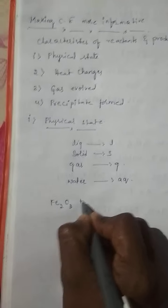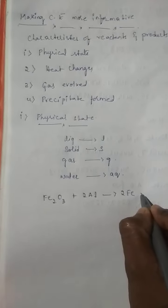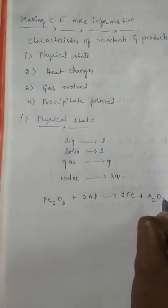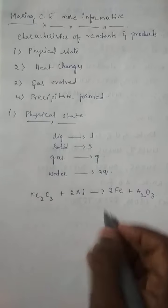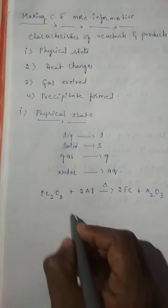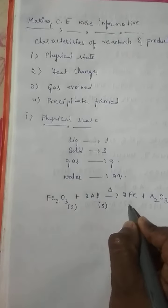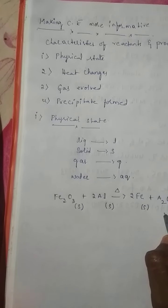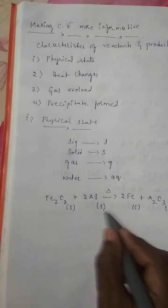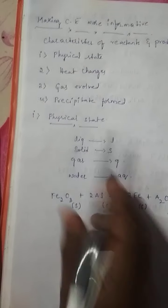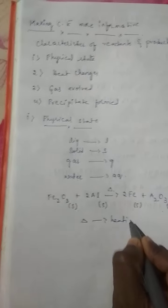Fe2O3 plus 2 aluminum gives rise to 2 iron plus Al2O3. This is a balanced equation. Now this is solid, aluminum is also solid, iron is also solid, aluminum trioxide is also a solid. This representation is nothing but physical state. Here triangle represents heating.